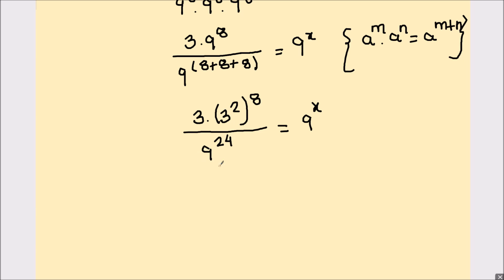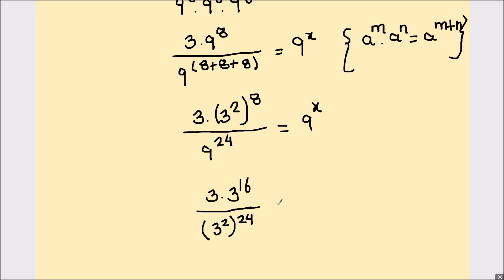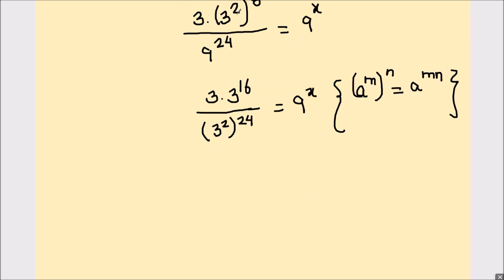The denominator 9 can also be written in terms of 3. So in the numerator we have 3 times 3 raised to power 2 times 8, which is 16, divided by 9 written as 3 squared whole raised to power 24, equals 9 raised to power x. We have used the exponent rule: a raised to power m times n equals a raised to power mn — the power inside the parenthesis gets multiplied with the power outside.